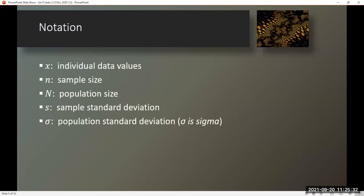Notation. Lowercase x will indicate individual data values. Lowercase n will indicate sample size. Uppercase N will indicate population size. Lowercase s will indicate sample standard deviation. Lowercase sigma will represent population standard deviation — remember, sigma is a Greek letter.